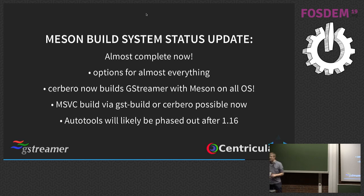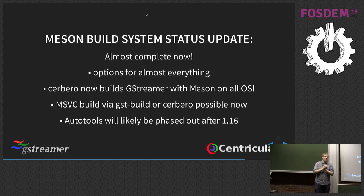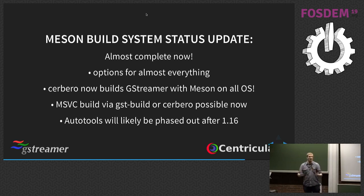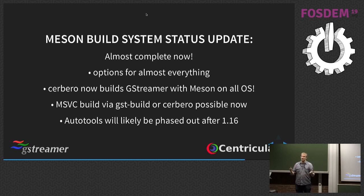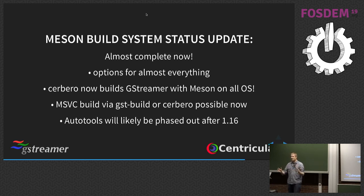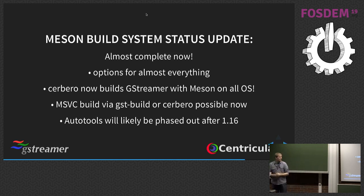On the build system side, we've been working on moving to Meson. It's really cool and really fast — think all the nice parts of CMake but built from scratch. It's widely adopted: GNOME is moving to it, systemd has, and VLC might be working on it. Our goal is that 1.16 is hopefully the last release with autotools, and we'll be able to remove autotools in the next cycle. With Meson we can also build with the MSVC compiler, which autotools didn't support.